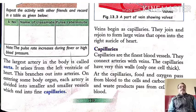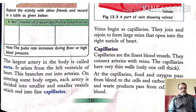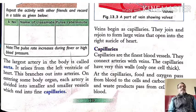The aorta arises from the left ventricle of the heart. It branches out into arteries on entering various body organs. Each artery is divided into smaller and smaller vessels which enter into the fine capillaries.